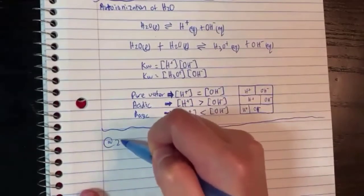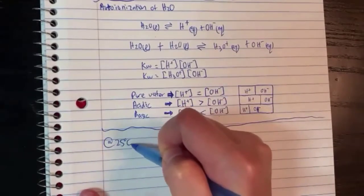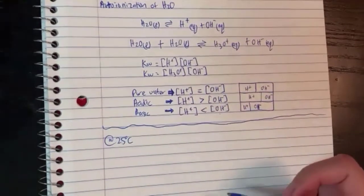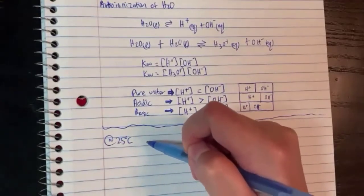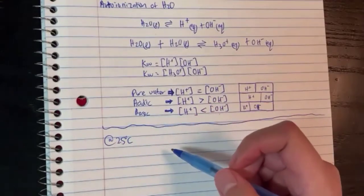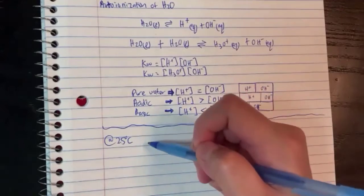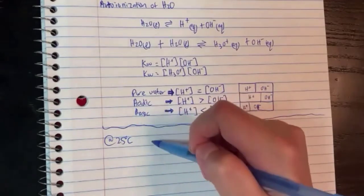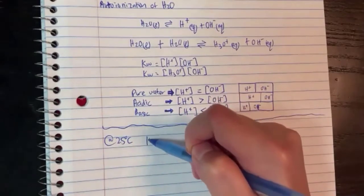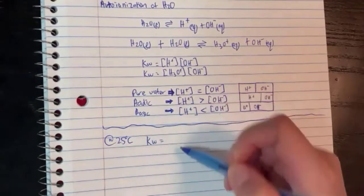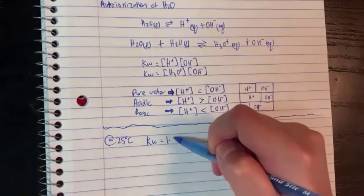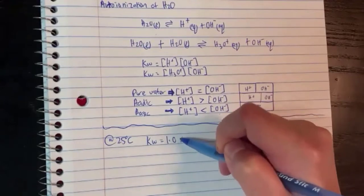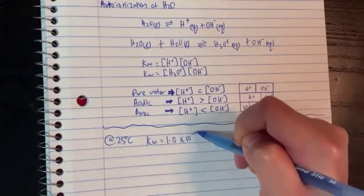At 25 degrees, because we're at room temperature a lot, the splitting of water is about two out of a billion. We will say KW at 25 degrees has a special number: it's 1.0 times 10 to the minus 14.